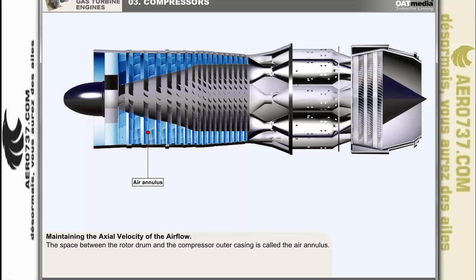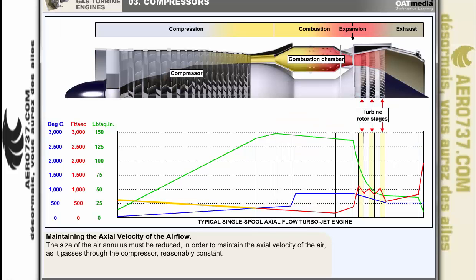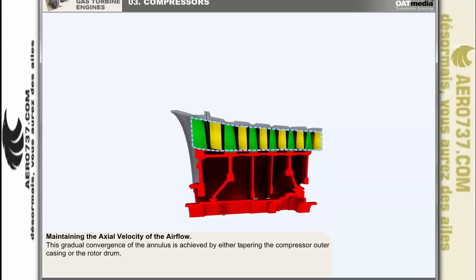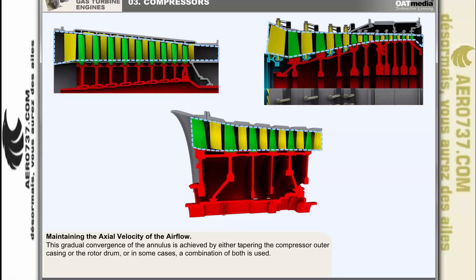The space between the rotor drum and the compressor outer casing is called the air annulus. To maintain the axial velocity of the air reasonably constant as it passes through the compressor — as it's being compressed into a smaller and smaller volume and its density is being increased — the size of the air annulus must be reduced. This gradual convergence of the annulus is achieved by either tapering the compressor outer casing or the rotor drum, or in some cases a combination of both.